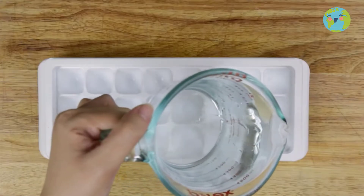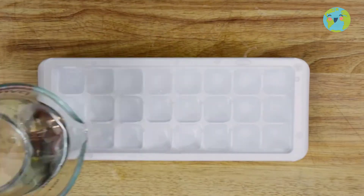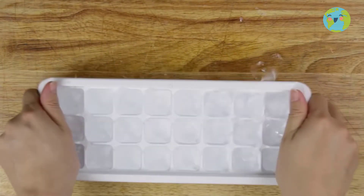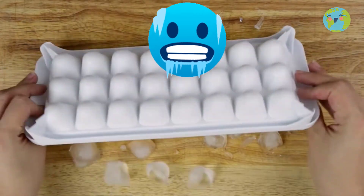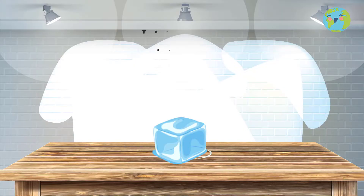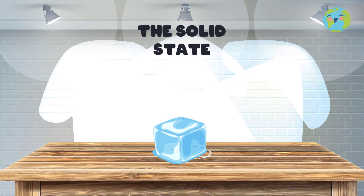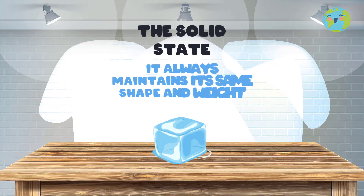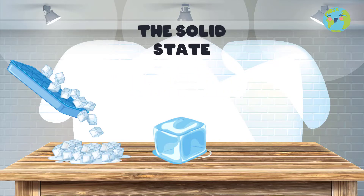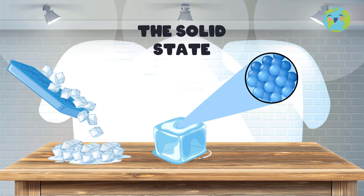But do you know what happens when we put water in the freezer? Yes, it freezes. This is the second state of matter and is called solid. It is characterized because when matter is in a solid state, it always maintains its same shape and weight. For example, if I take the ice out of the cooler, it looks the same as how it did inside it and weighs the same. That happens because in this state, the particles that compose it are close together and very ordered.